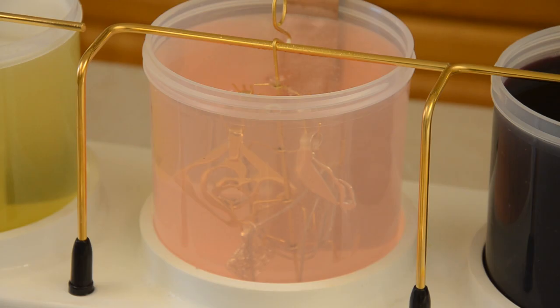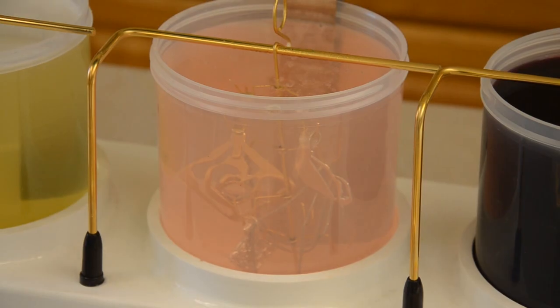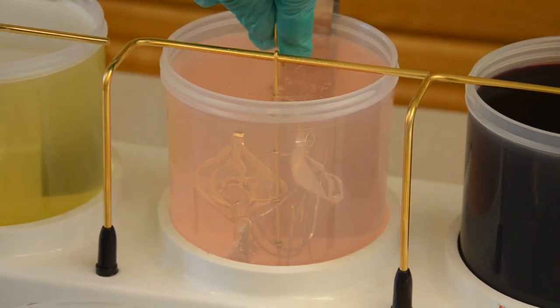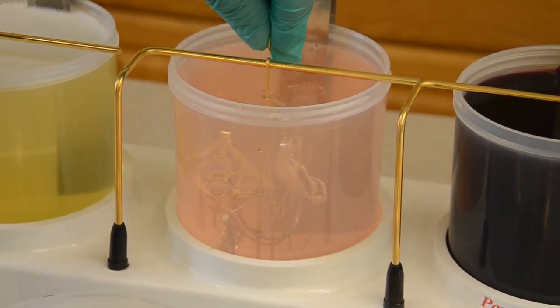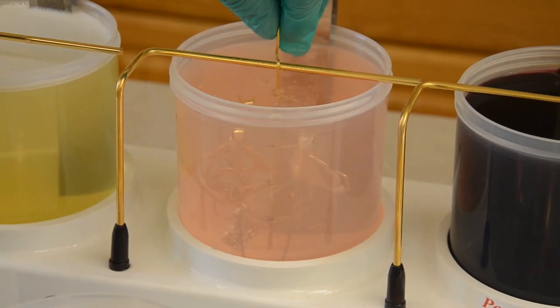And with this particular kit you can plate items with an area of up to about 12 square inches. So there's a lot of pieces that you can hang on the rack. Again you can see we get a light bubbling or gassing at the surface.